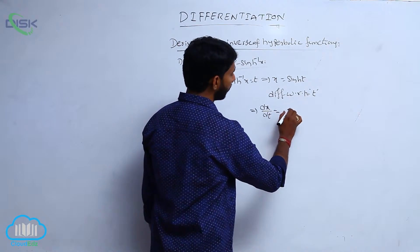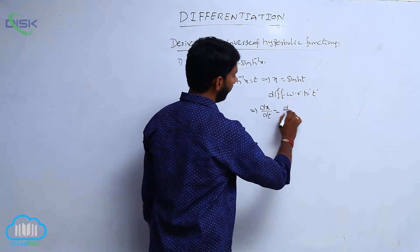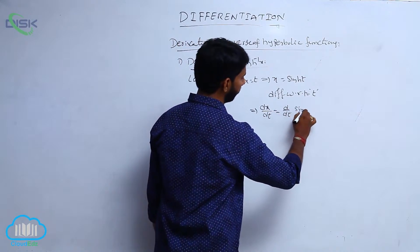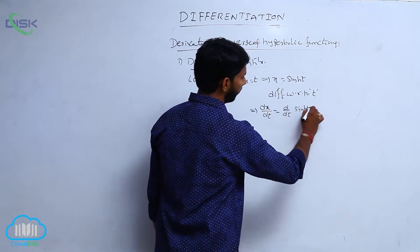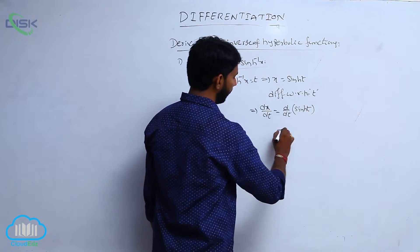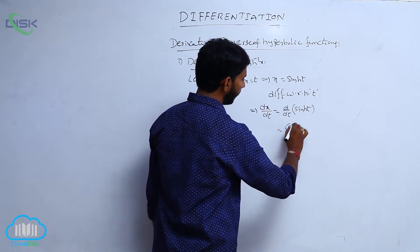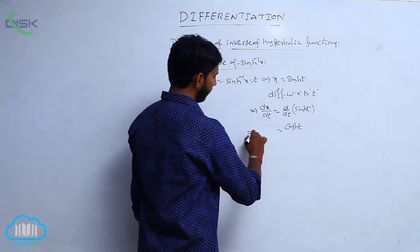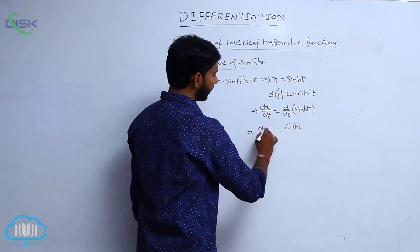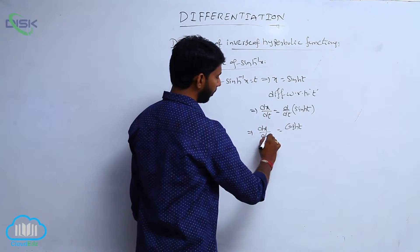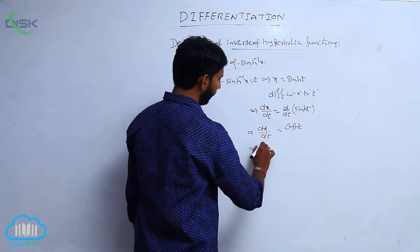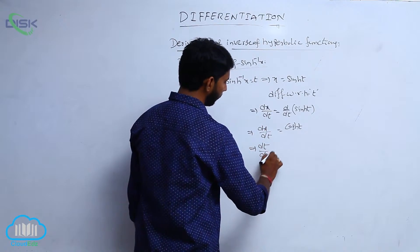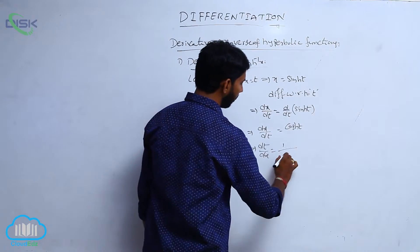The derivative of sinh t, that is d by dt of sinh t, is equal to cosh t. Then dx by dt is equal to cosh t, and therefore dt by dx is equal to 1 by cosh t.